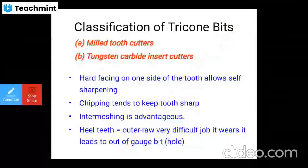The classification of tricon bits includes mill tooth cutters and tungsten carbide insert bits. Hard facing on one side of the teeth allows self-sharpening, and the chips tend to keep the tooth very sharp. However, heel teeth contacting the outer rock can be a very difficult job, leading to gauge-out of the bit.